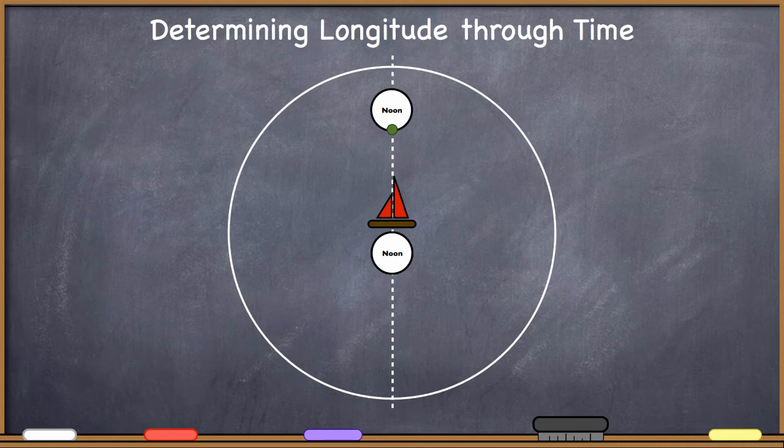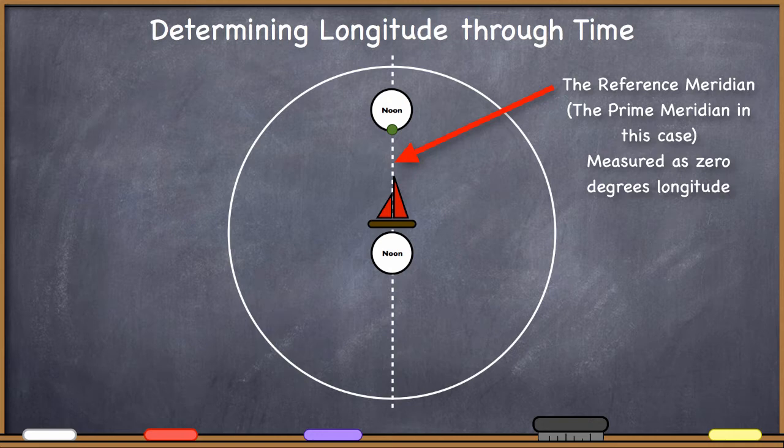Here we've got a dotted line which represents our reference longitude, the longitude that we are going to consider zero. This would be the prime meridian in the case of John Harrison, running right through Greenwich. And it's local noon there.